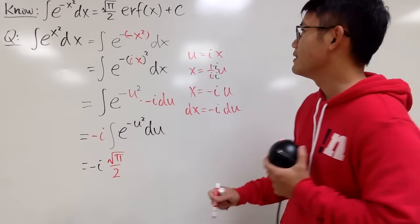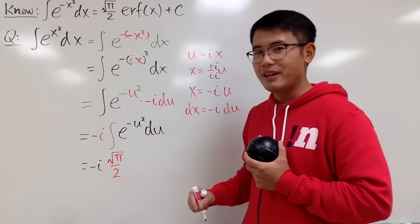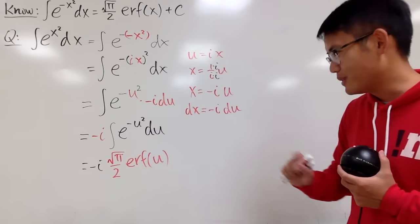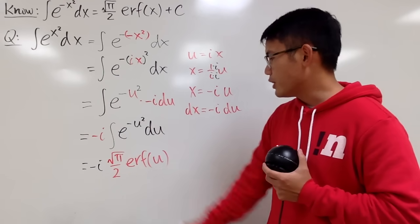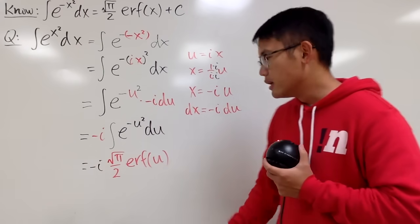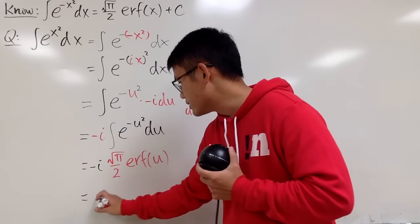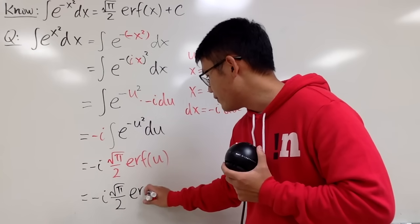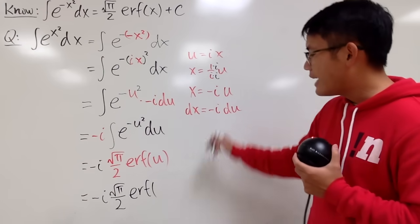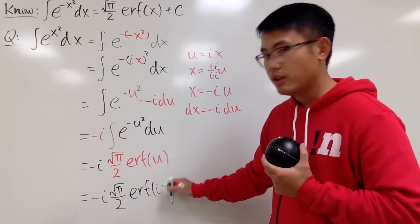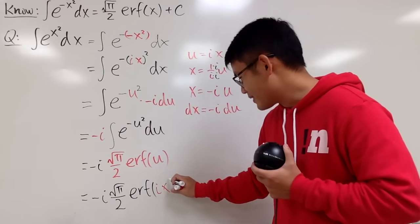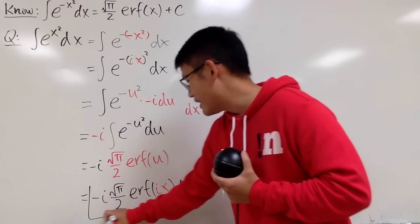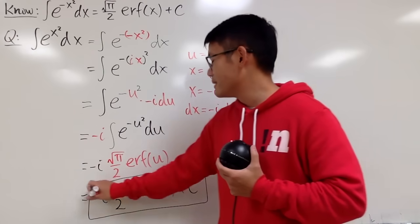There's u and i together in this integral — so cool! Anyway, we have negative i times square root of pi over 2 times the error function of u. Now we go back to the x world. Since u equals ix, the answer is negative i times square root of pi over 2 times erf(ix), plus a constant. That's it!